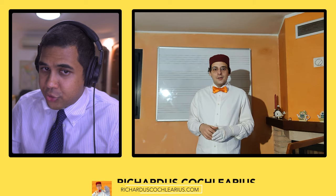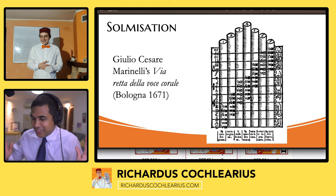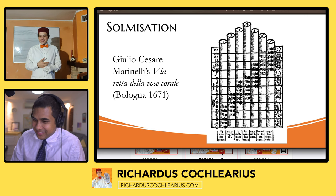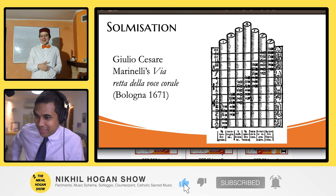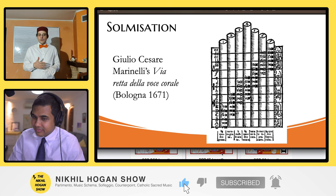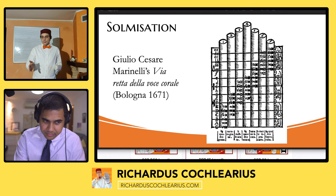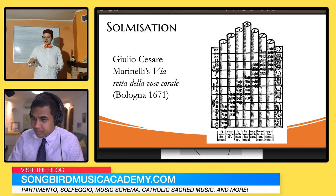Now, you have a slide here on Giulio Cesare Marinelli — let's put that up. So this is the gamut, right? Giulio Cesare Marinelli wrote an interesting book whose name is 'La Via Retta della Voce Corale' — in English, 'The Right Way of Choral Voice' — which are instructions for singers of canto fermo, so Gregorian chant in the Renaissance, or in this case in the early Baroque, because this book was written at the end of the 17th century.